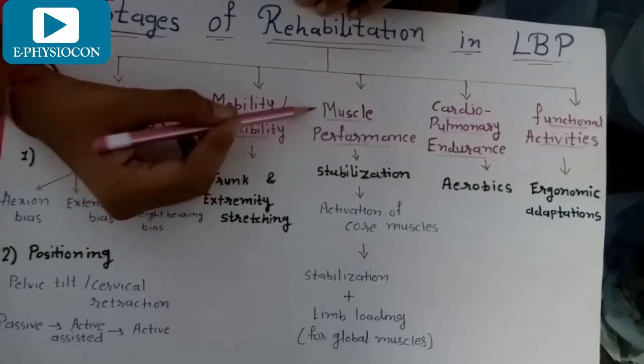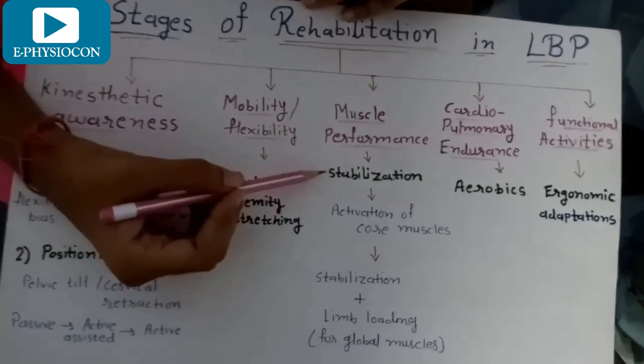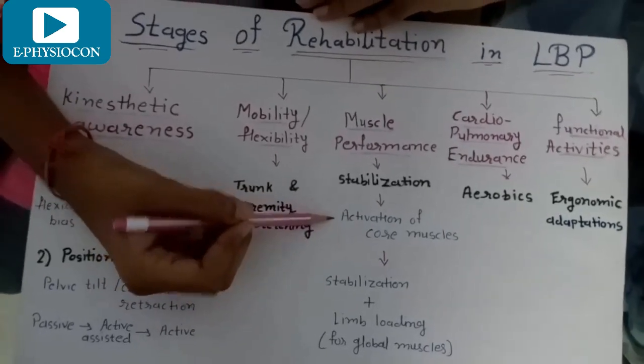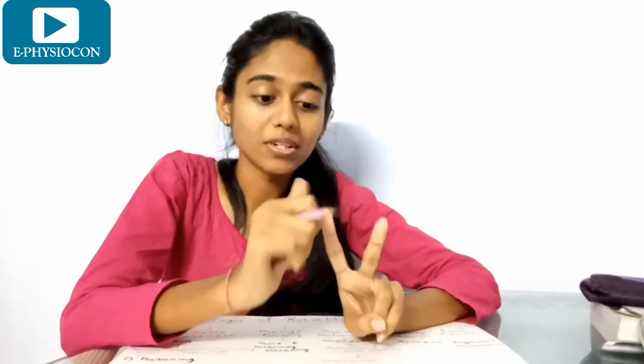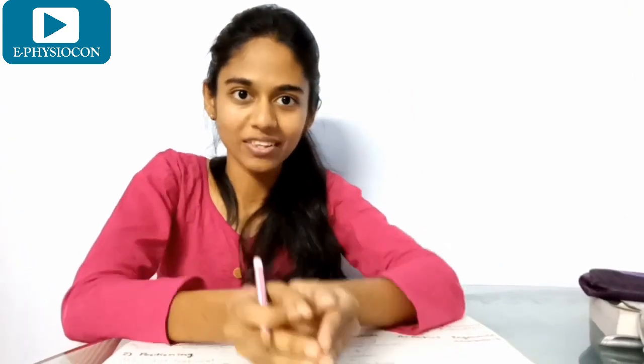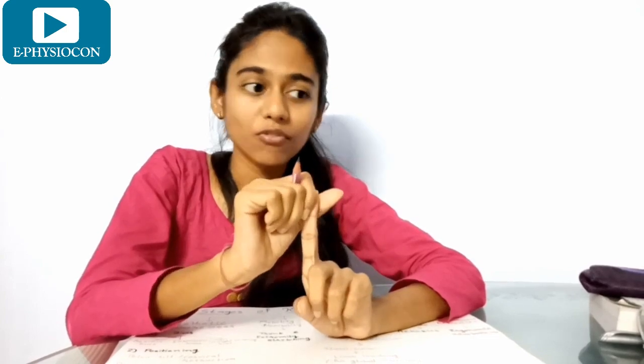Now the third stage is muscle performance, which is very important. It includes stabilization and activation of the core muscle and the global muscle. Core muscles stabilize the spine while global muscles provide spinal mobility. There are four core muscles: first is transversus abdominis, second is multifidus, third is deep rotators, and fourth is deep fibers of quadratus lumborum. For transversus abdominis activation, we perform the drawing-in maneuver.